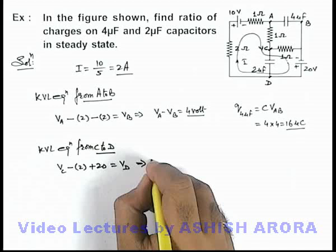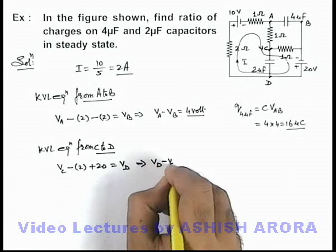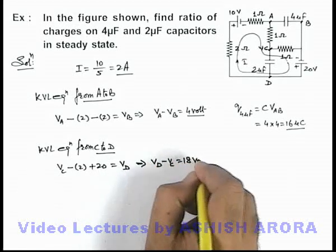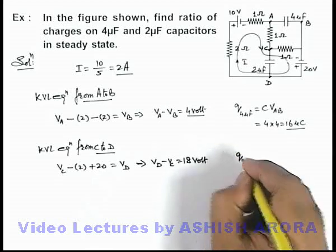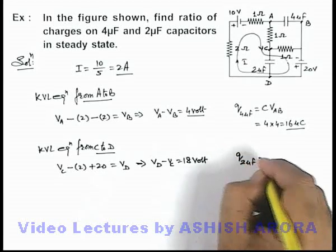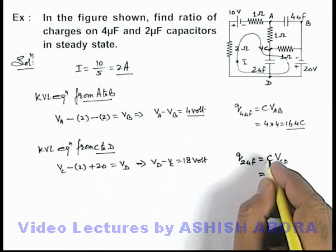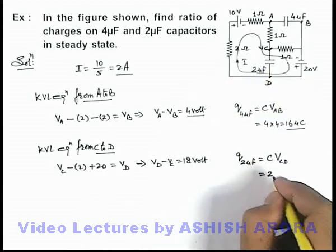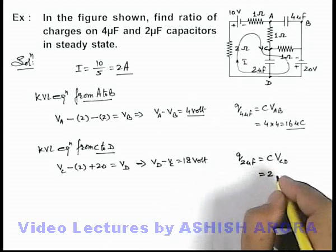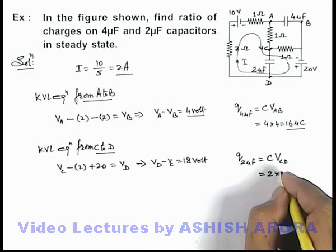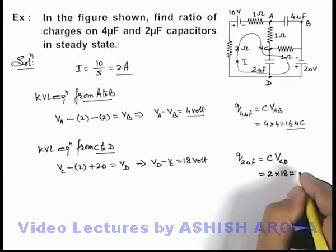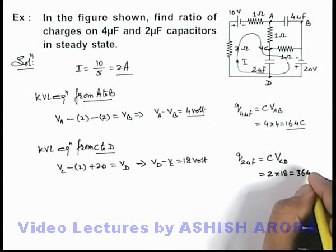Then on simplifying we are getting v d minus v c is equal to 18 volt. So using this we can find out the charge on 2 micro farad capacitor that will be c v c d, so on substituting the value of the capacitance is 2 and the potential difference here is 18 volt so the result will be 36 micro coulomb.